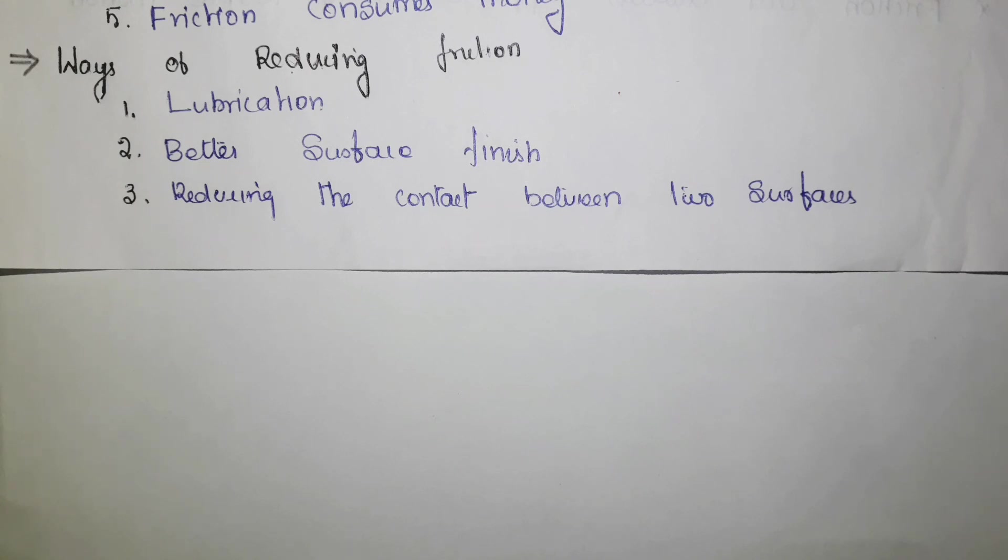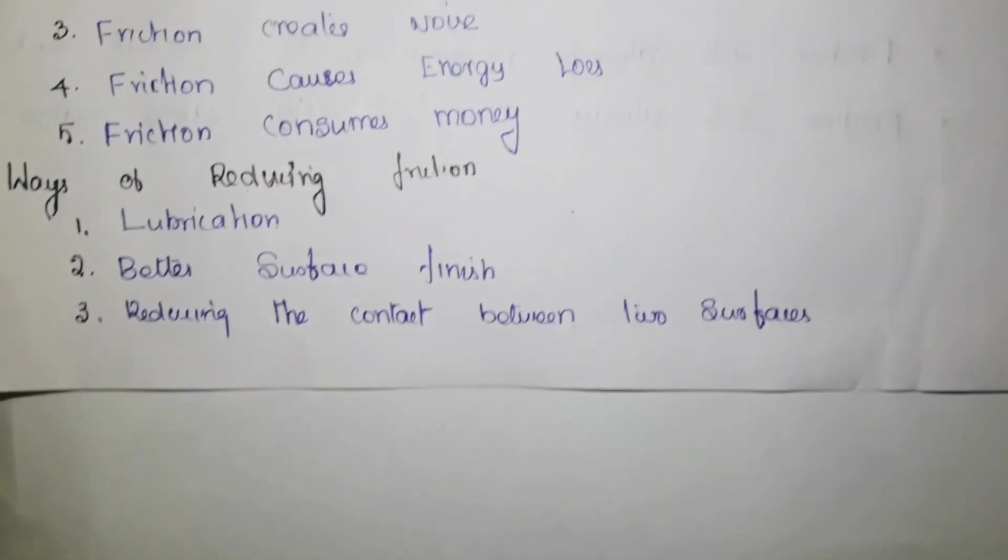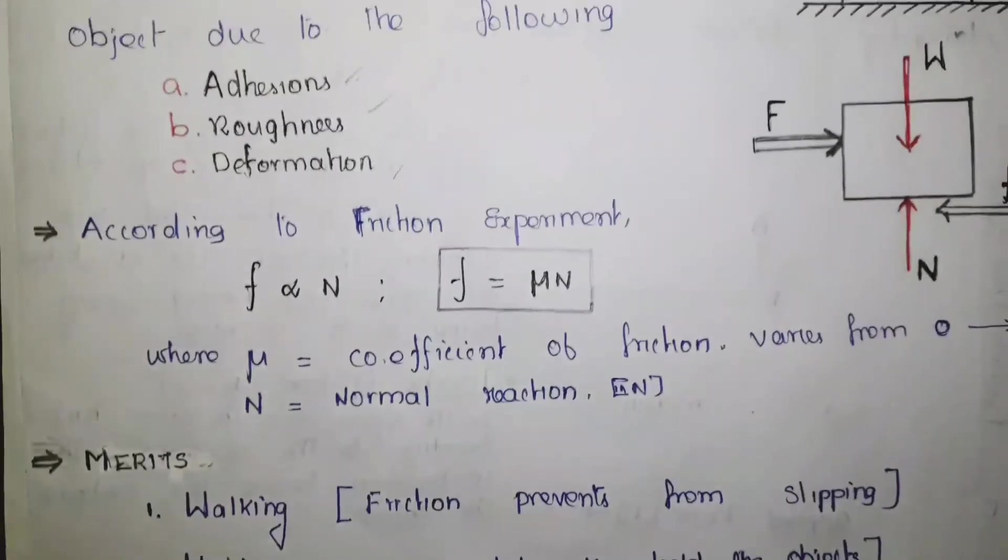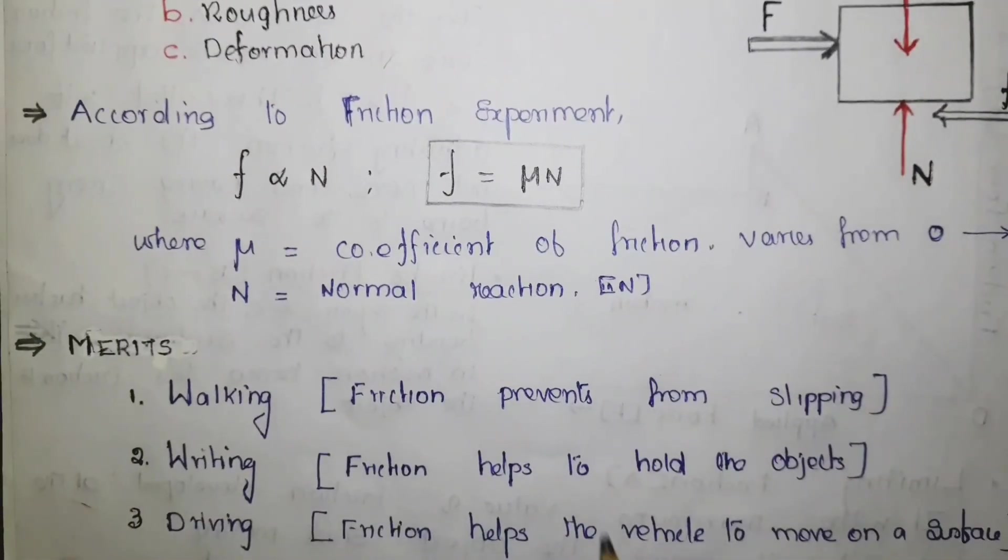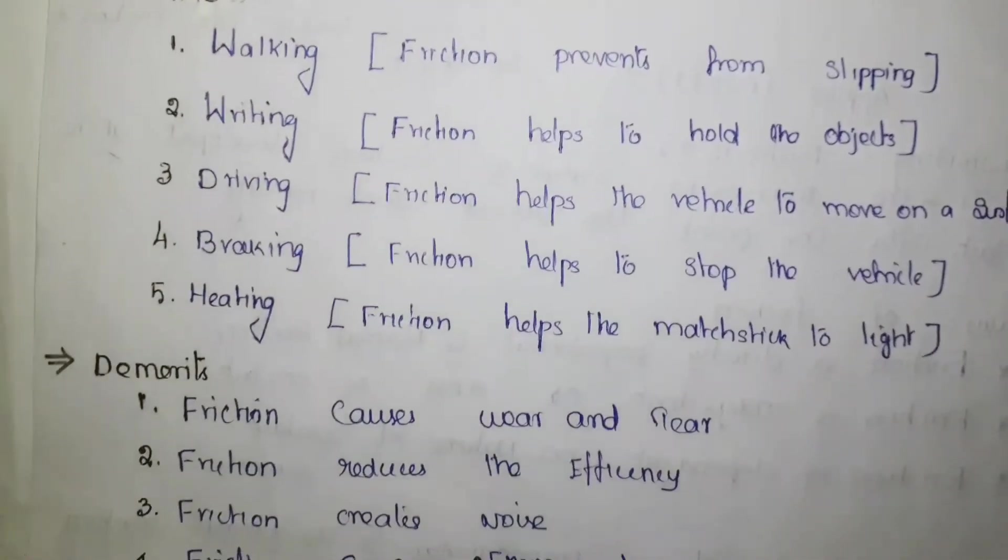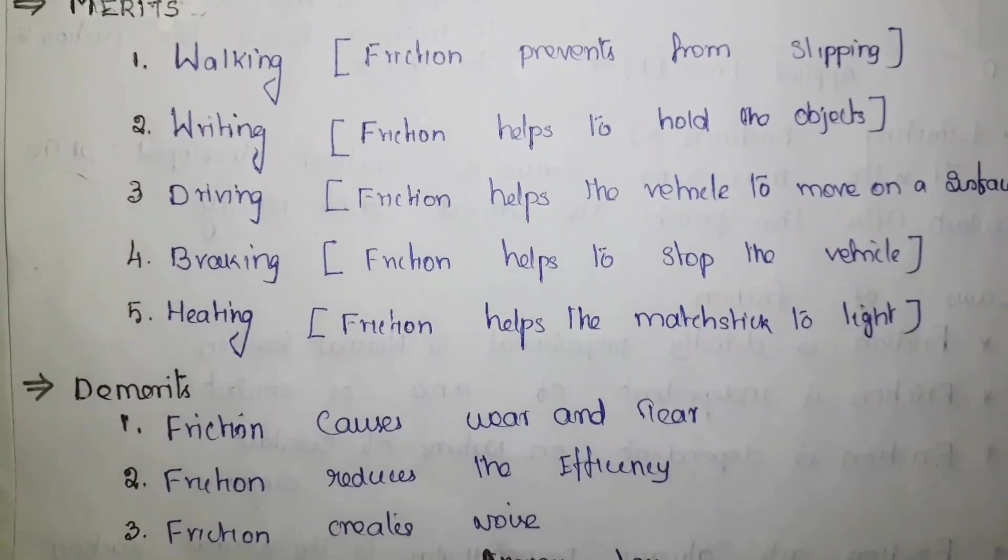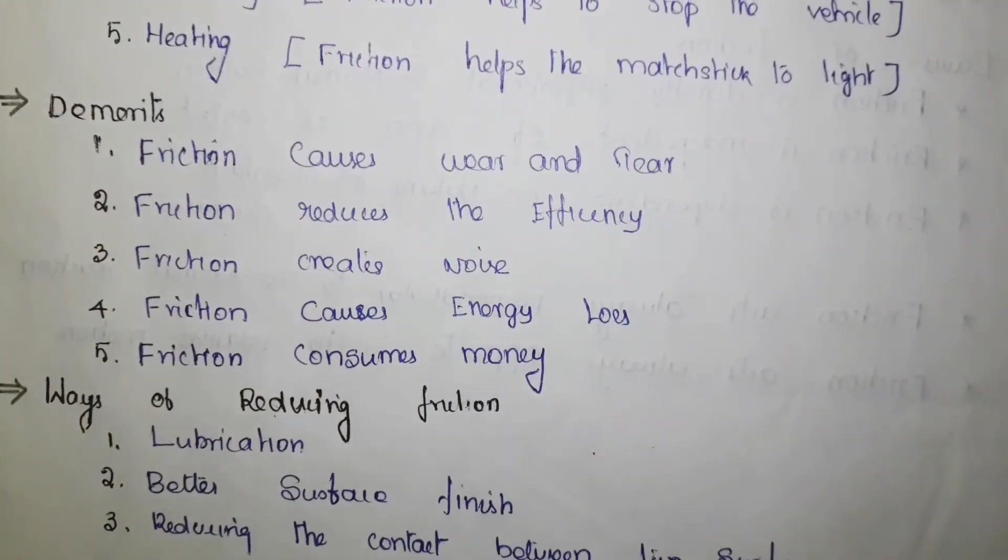That's all about this video. We have discussed three important topics. First one is the definition and its formula. This is the formula, very important formula. Then the merits and demerits of friction. Then the last one is how to reduce the friction. Thank you. We will meet in the next video where we are going to see another important thing in friction.